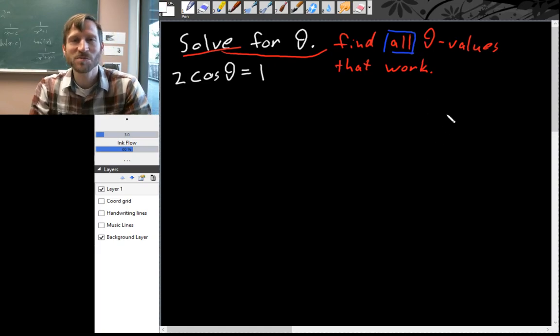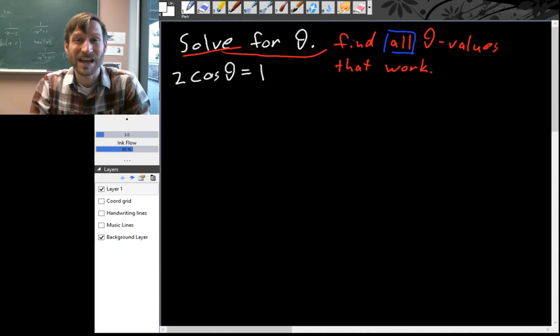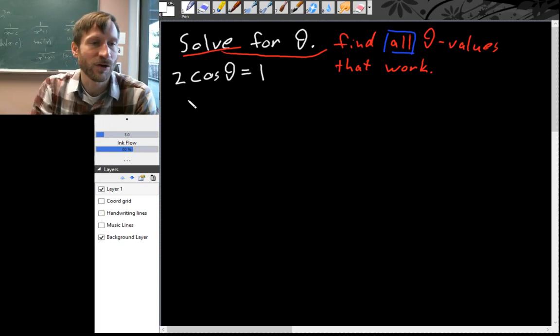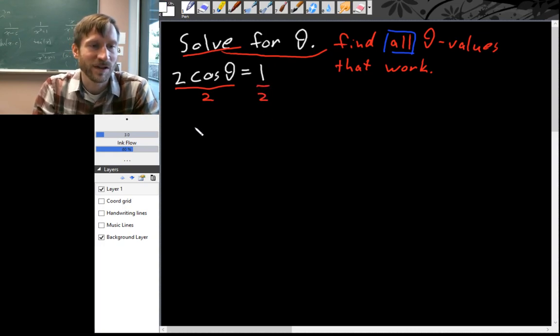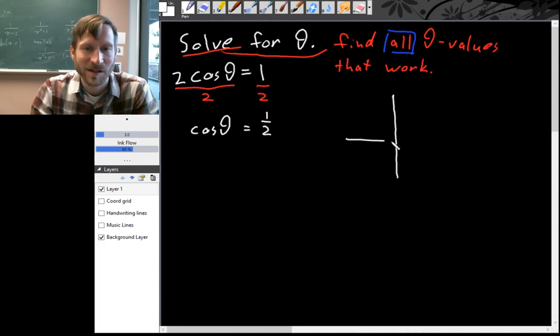It usually isn't too much trouble to find one or two values that work, but we need to find every value that works. Since theta only shows up once in this equation, we can make progress just by isolating the theta value. Our first step would be let's get rid of that 2, so on the left hand side we have cosθ and on the right hand side 1/2. Let's draw the most important diagram just to be sure we're getting the right angle here.